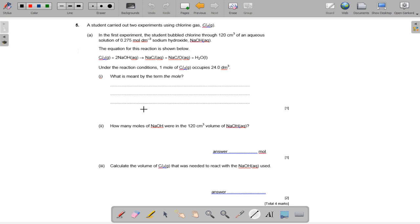What is meant by the term the mole? Add 120 centimeter cubed of an aqueous solution of 0.275 moles per decimeter cubed of sodium hydroxide. We need to calculate the volume of CO2 reacted with sodium hydroxide.